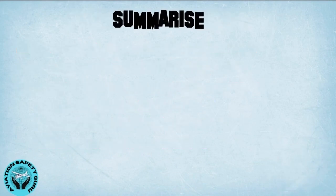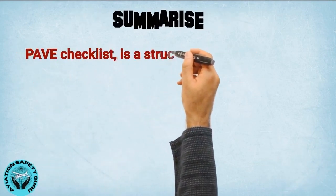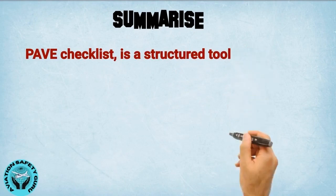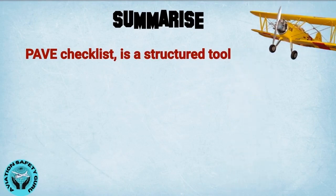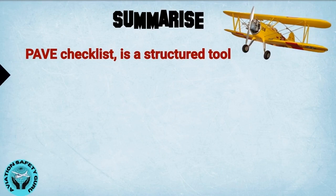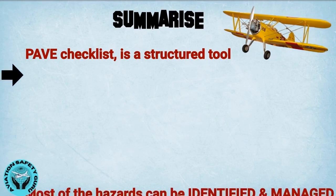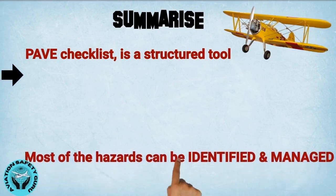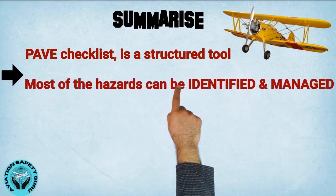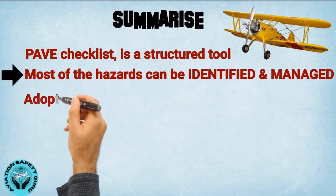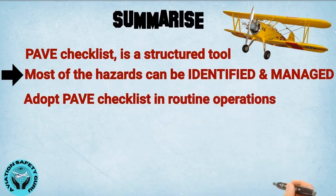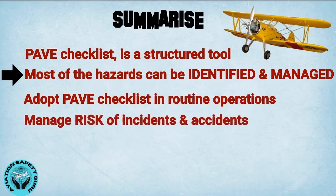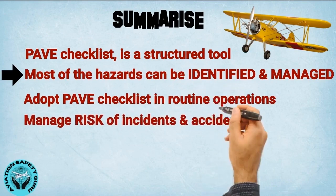We can summarize that the PAVE checklist is a structured tool which can be used to identify hazards associated with flying operations. Using this checklist, most of the hazards can be identified and managed. Adopt the PAVE checklist in routine operations and manage the risk of incidents and accidents.